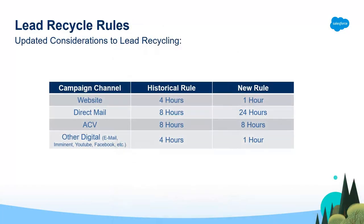Lastly, we have updated the lead recycle rules for any unworked leads. The previous rules were set to have leads recycled back to the queue if they were unworked based off the following logic: Website, 4 hours; Direct Mail, 8 hours; and ACV, 8 hours as well. These rules have been updated to now follow the following logic: Website leads unworked for 1 hour will recycle back to the queue. Direct Mail has been extended to 24 hours. ACVs have remained the same at 8 hours.